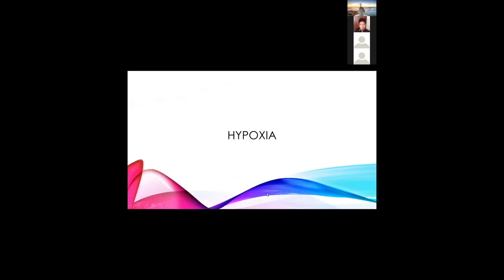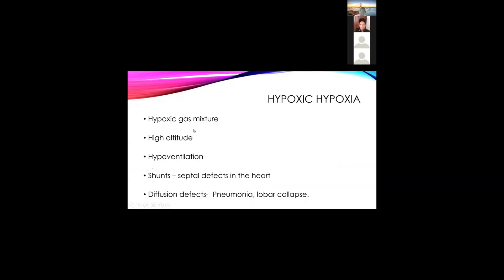Now the key topic: hypoxia. There are four types. The first is hypoxic hypoxia, where the problem is the inspired gas mixture — your oxygen concentration is reduced in conditions like high altitude, hypoventilation, shunts such as septal defects, diffusion defects like pneumonia, lobar collapse, ARDS, and COPD because of V/Q mismatch.